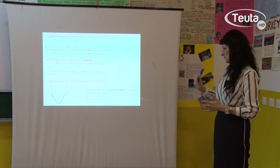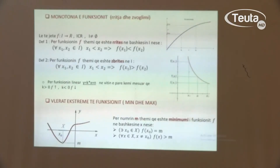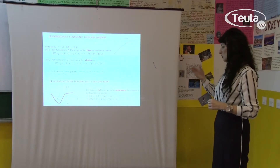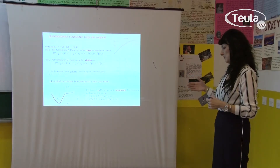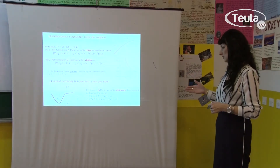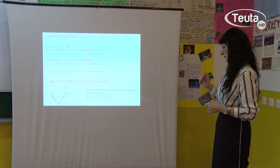Pra, ndaj do të japim definicionin: për numrin m themi që është minimumi i funksionit f në bashkësinë X, në qoftëse ekziston x₀ për të cilin arrihet ajo vlerë, pra f(x₀) = m, dhe për çdo vlerë tjetër të x-it që nuk është barabartë me x₀, vlerat e funksionit janë më të mëdha se m. Këtu kemi të paraqitur minimumin e funksionit.